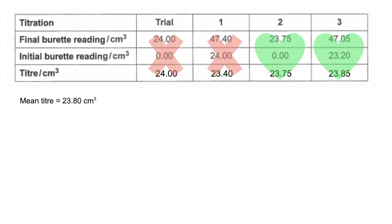The uncertainty for titre 1 now, just remember that a titre is based on two burette readings, so you've got to double the uncertainty. So for titre 1, it's 0.1 over 23.4 times 100, 0.43%.